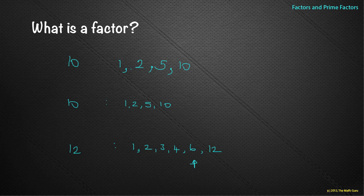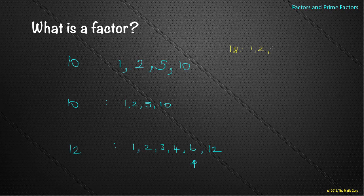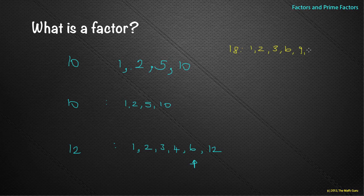What about eighteen? The numbers one, two, and three go into eighteen — three goes in because eighteen is in the three times table: three, six, nine, twelve, eighteen. Four doesn't go in, five doesn't, six does, seven and eight don't, nine does, and eighteen does. Because nine was roughly halfway, I didn't need to go much further.